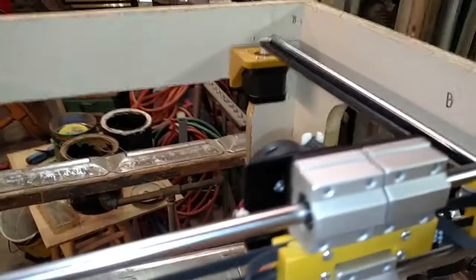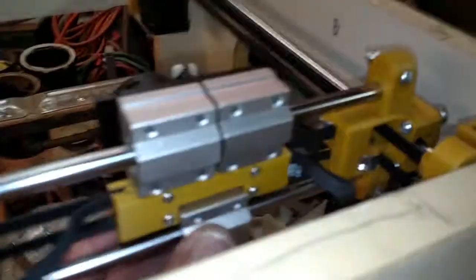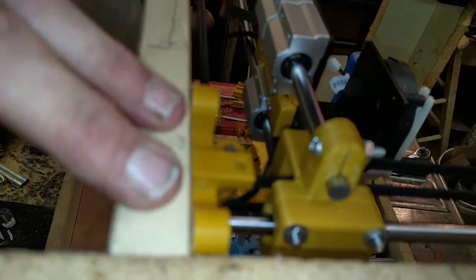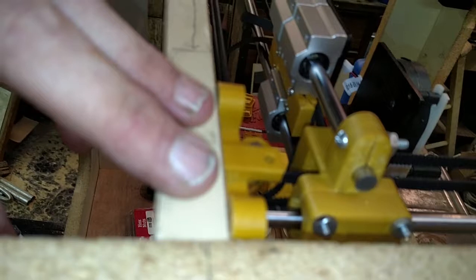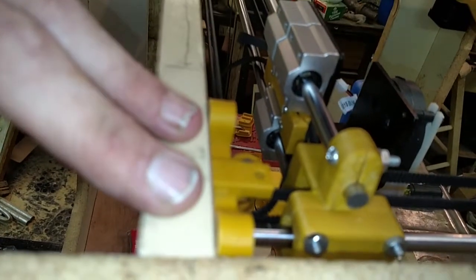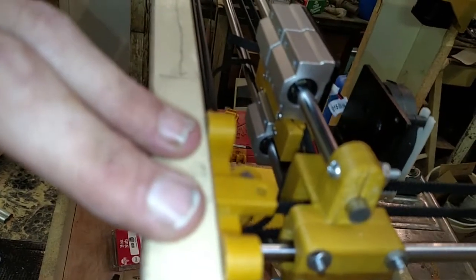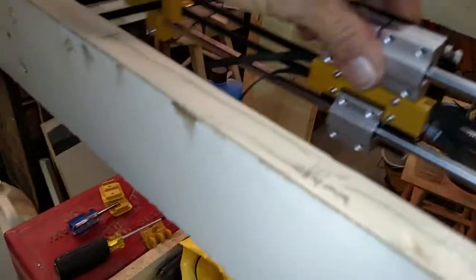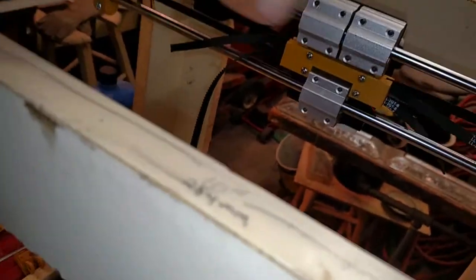Aside from the fact that the rods still have some play in the bearings. If you look, we're not quite square here on the x-axis. That's a matter of fine-tuning the belt tension between the two different motors. So far, everything is working out.